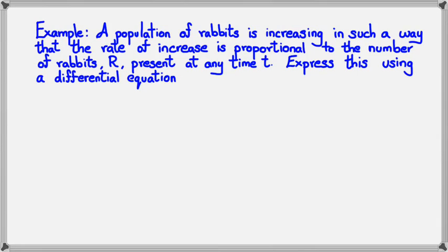In this question, we have a population of rabbits is increasing in such a way that the rate of increase is proportional to the number of rabbits, r, present at any time, t. Express this using a differential equation. Now, if you remember those three key ideas that we were talking about earlier, this was the last one where the population of rabbits is proportional to the number of rabbits present. So, in this case, we would write this as dr over dt equals, well, we don't know what k is, so we just leave it as k at the moment, some constant multiplied by r itself.